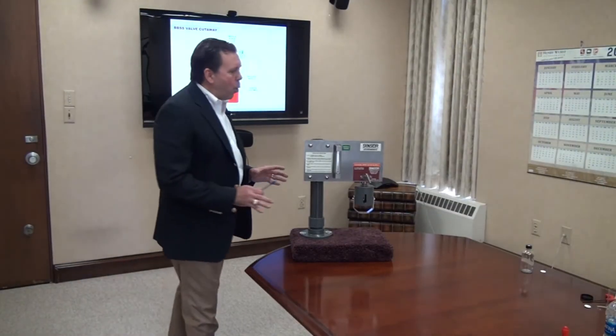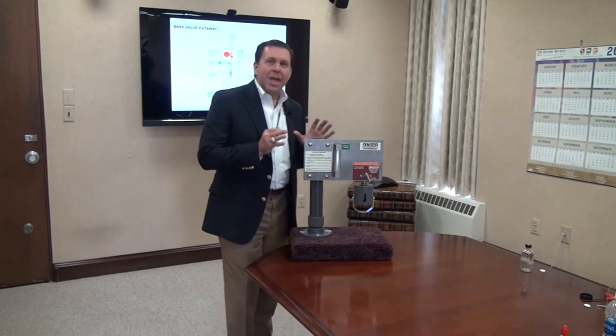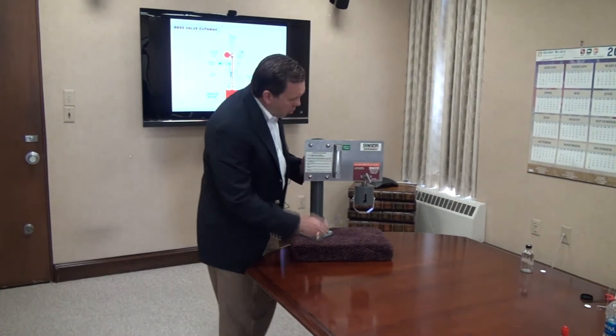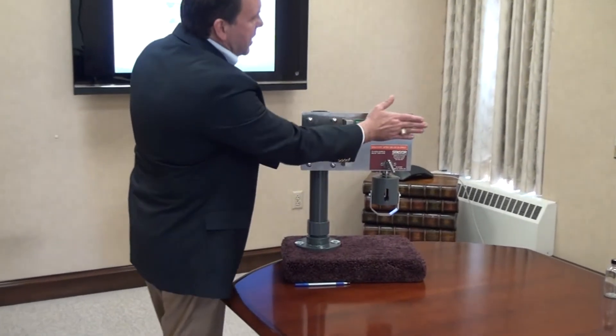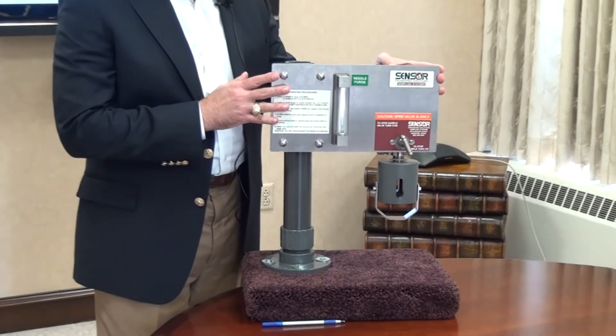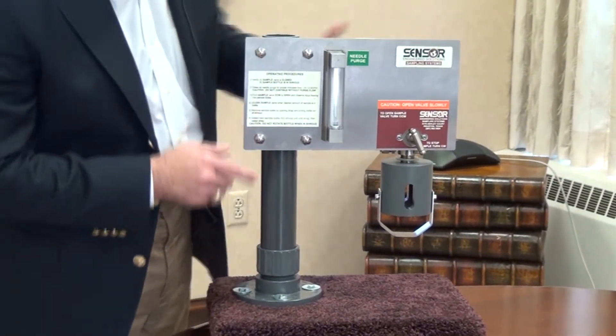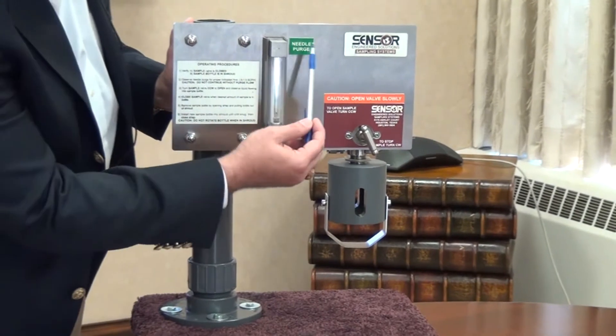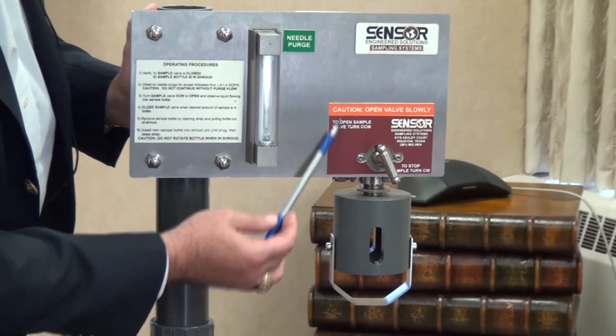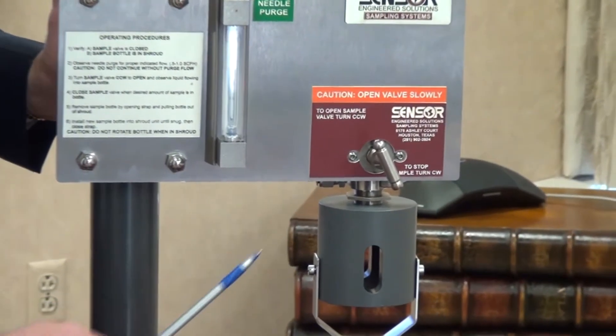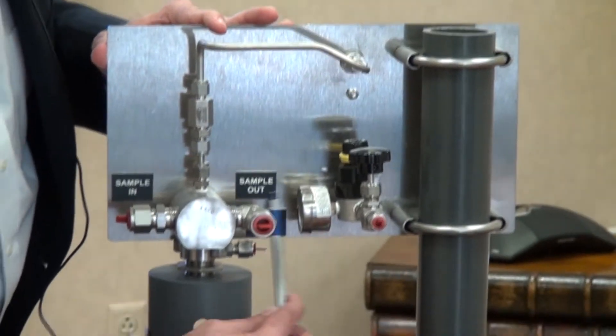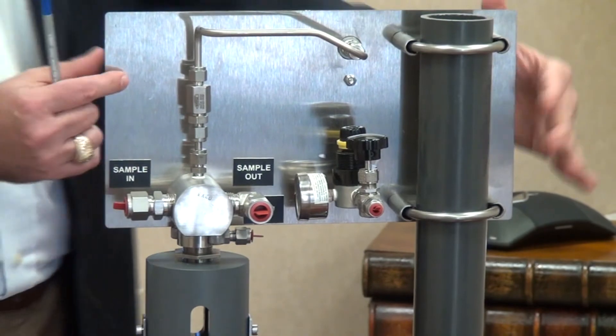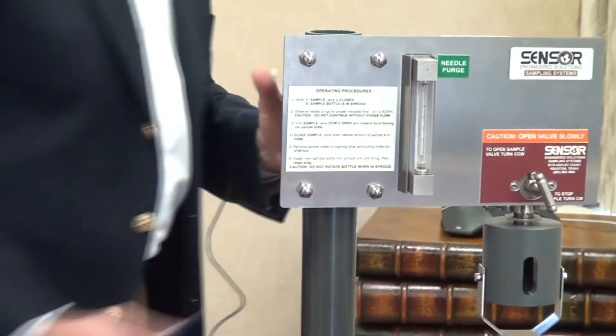Okay, so let's take a look at what the components look like on the panel on an actual system. This is a typical BBSS panel. You can see as a standard we mount everything on a 304 stainless steel plate. All of the valves and all of the components are clearly labeled with laser-etched phenolic tagging. There's a full set of operating instructions on the front of the panel, and you can see we label all of the sample in, out—all the components are clearly labeled. That's a standard for Sensor Sampling System.